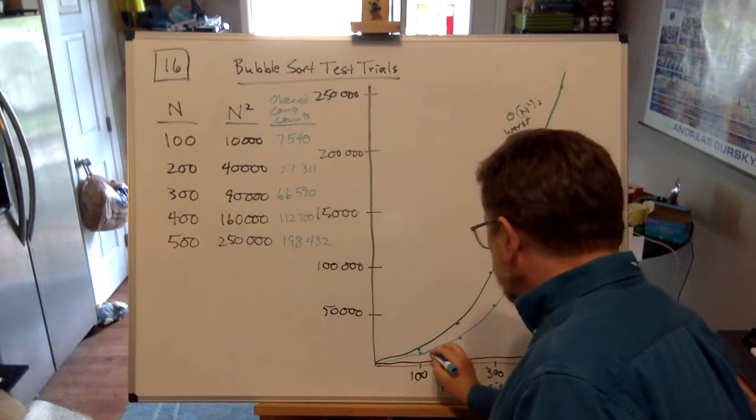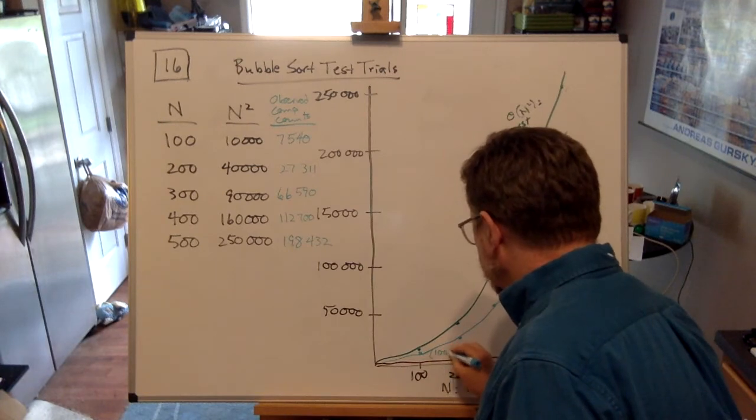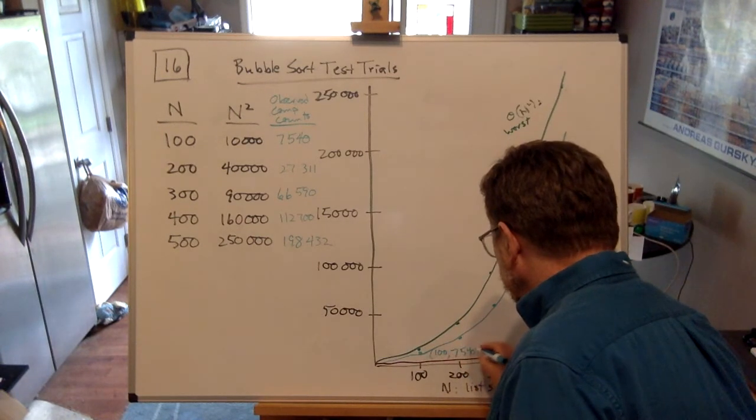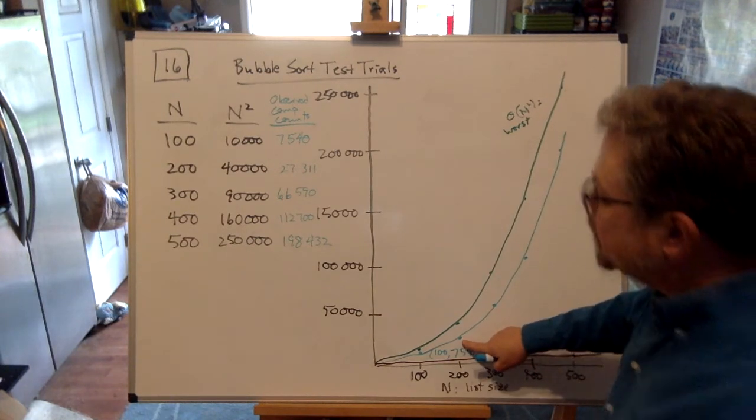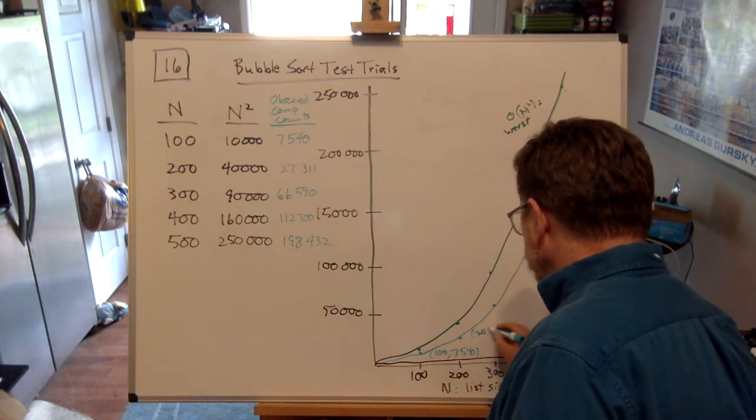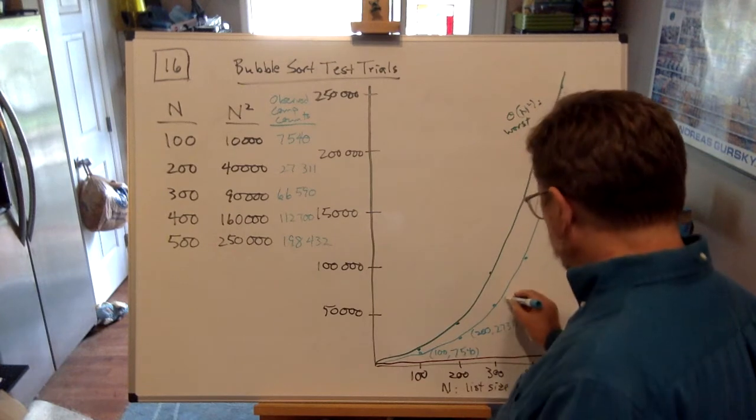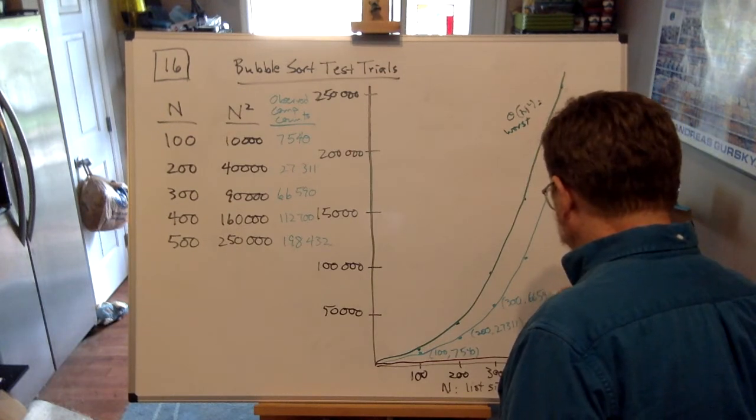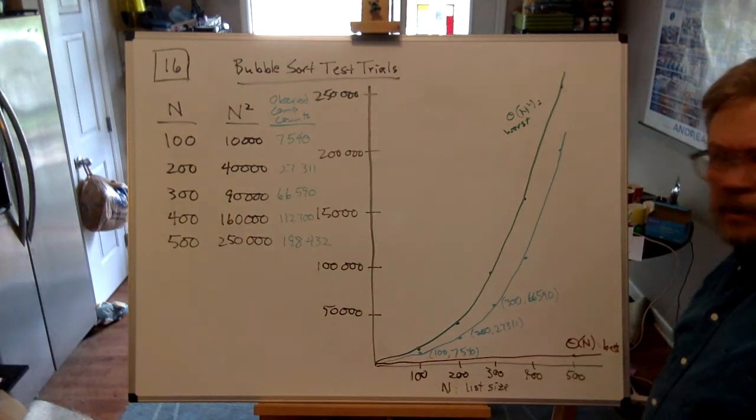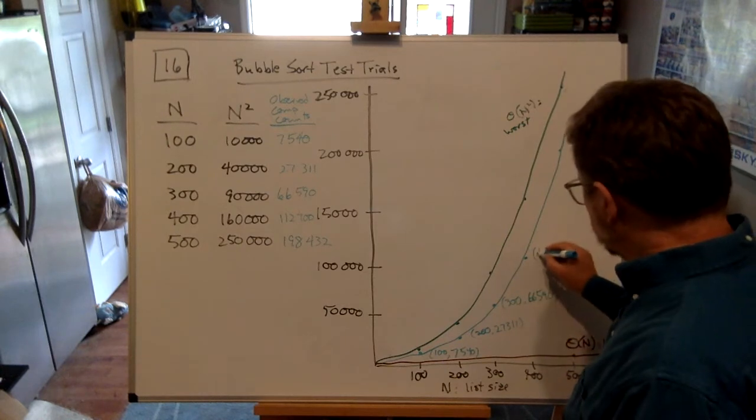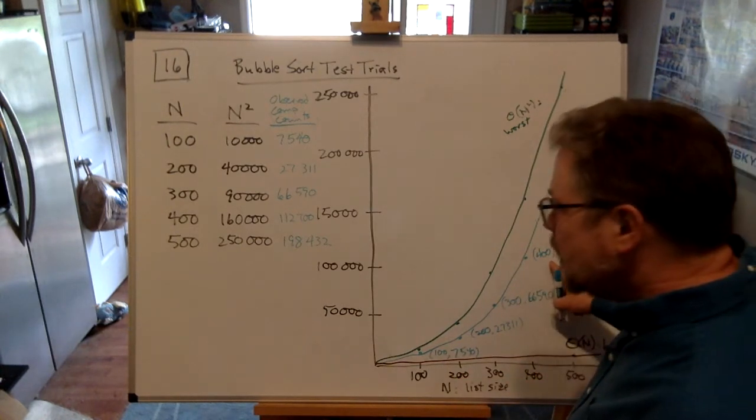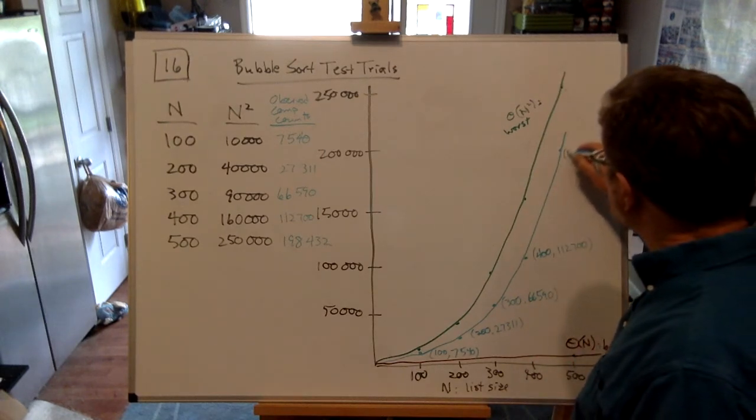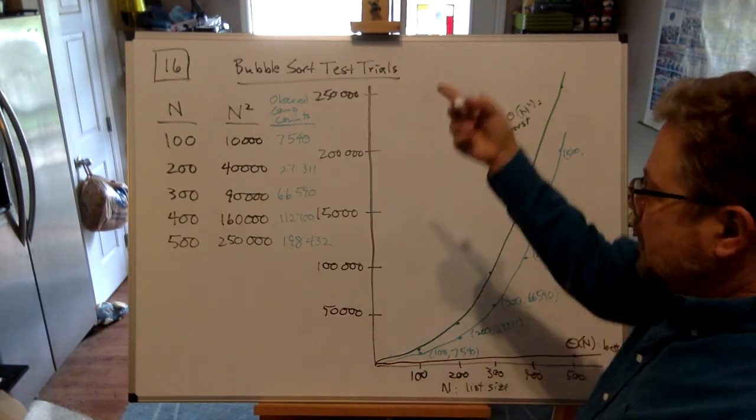Now here's why I didn't put commas. I want to put the coordinates of these points to show I am plotting experimental data. There's a comma: 100 for the x-axis, 7,540 for the y-axis. See what I'm doing? This point, I went over 200 and up 27,311. This point, I went over 300 and went up 66,590. The extra commas would make it look like I had an ordered triple rather than an ordered pair, which would be confusing. Over here I went across 400 and up 112,700. Last but not least, I went over 500 and up 198,432.